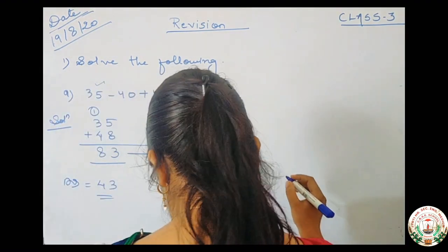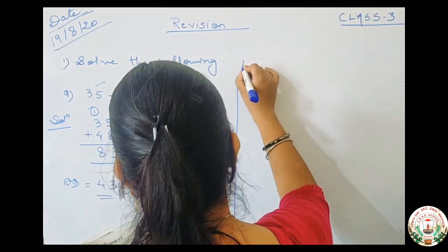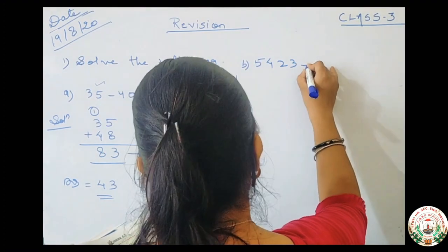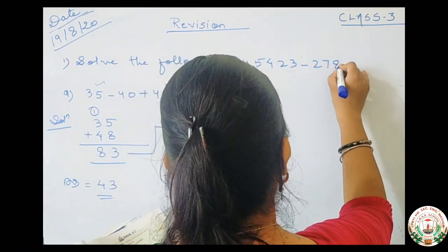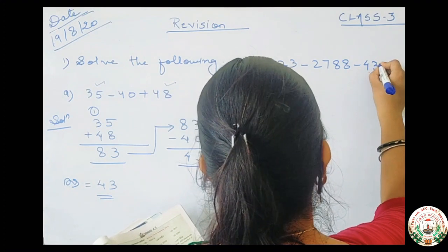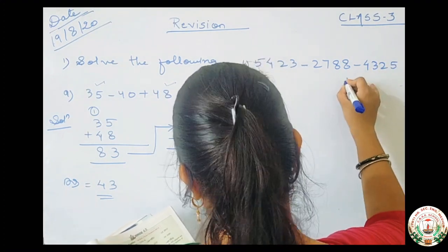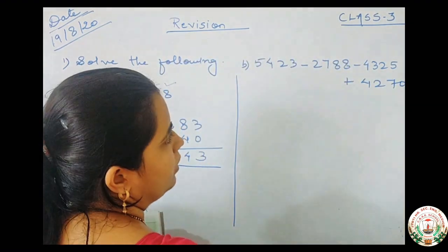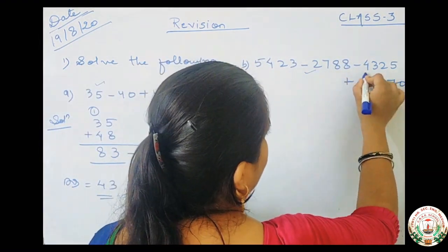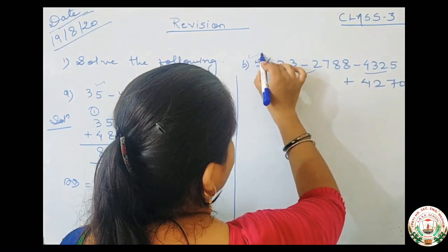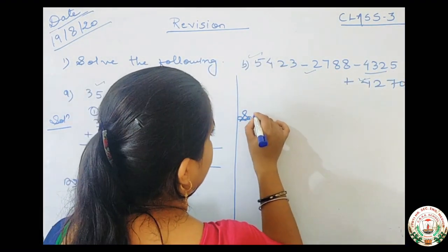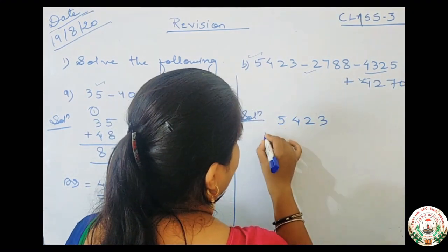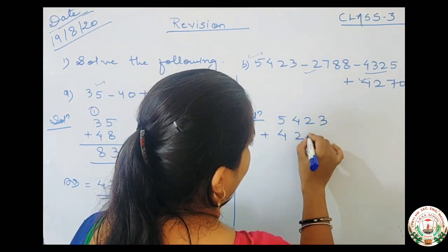Now next question. Number B is 5423 minus 2788 minus 4325 plus 4270. So first we will find the addition part. The minus signs belong to 2788 and 4325; those are subtraction. The addition numbers are 5423 and 4270. So first we will add those numbers. Solution: 5423 plus 4270.